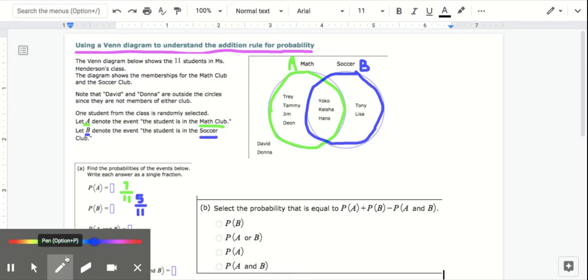What's the probability of A and B? You can think of the probability of A and B as the overlap or the intersection. So the probability of A and B is the center region of the Venn diagram. 1, 2, 3. 3 out of the 11 students are in both A and B, the soccer club and the math club.